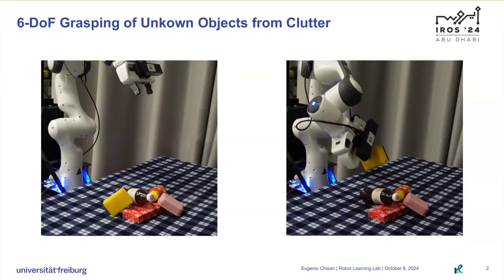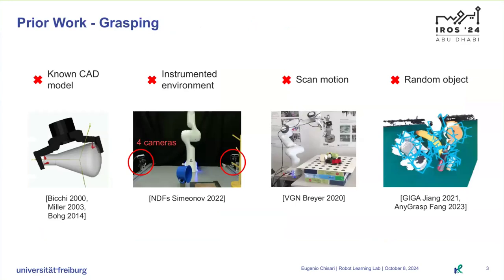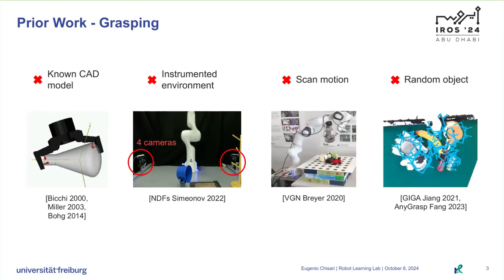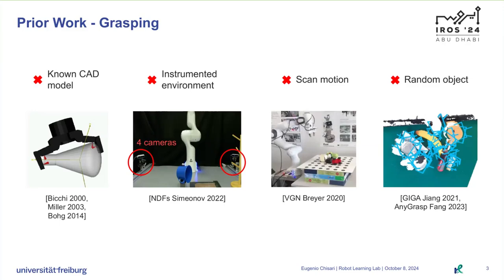Robotic grasping is a widely studied problem and many prior works have demonstrated impressive capabilities. Nevertheless, there still exist many limitations to address. Early works assumed a CAD model of the object to manipulate. Other works, such as NDFs, assume a heavily instrumented environment where cameras are mounted all around the workspace. VGN uses a single onboard camera, but requires a scanning motion around the workspace which drastically reduces the speed of execution. And finally, many prior works do not reason about the different objects in the scene, which limits them to only random object picking.